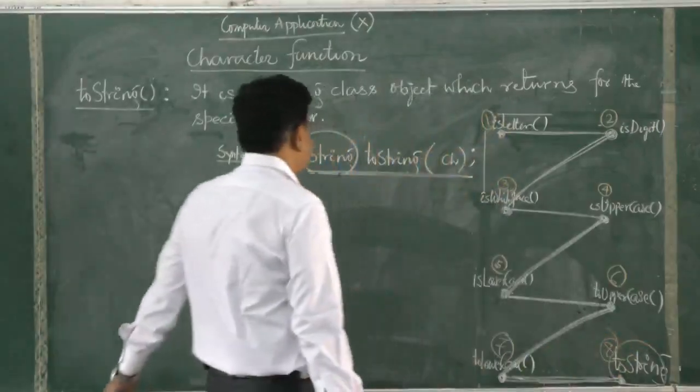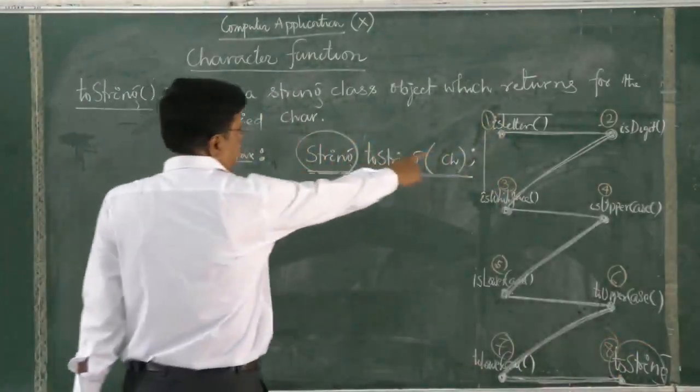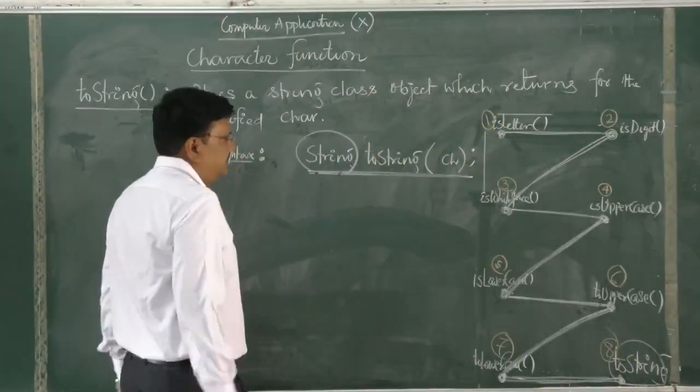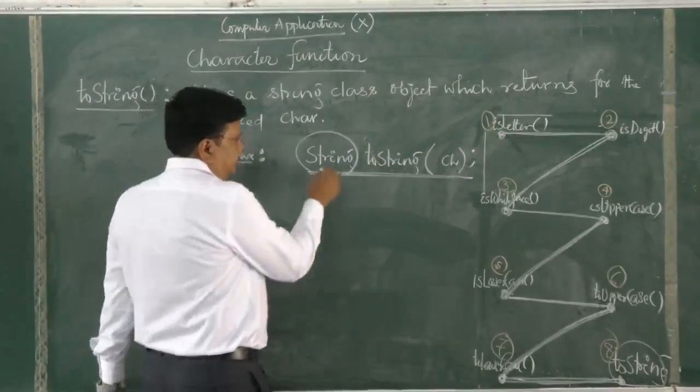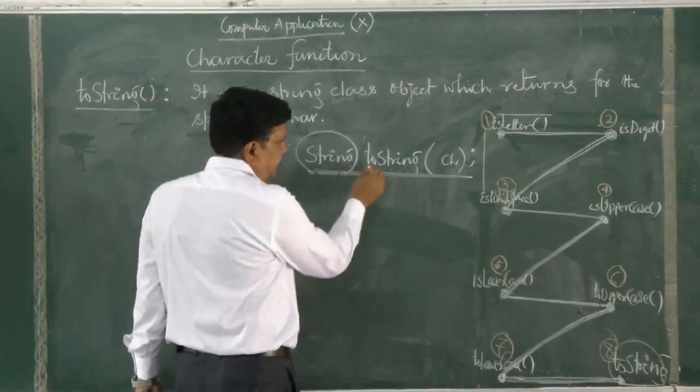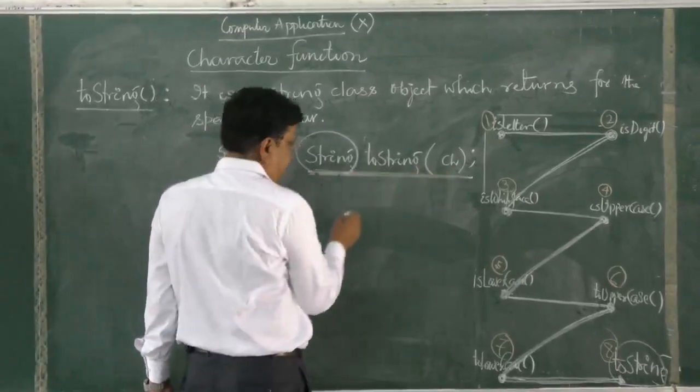In the string type, the syntax is: string toString(character), then string toString(character).